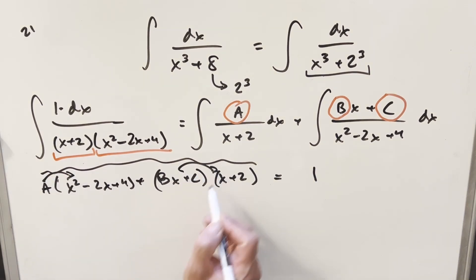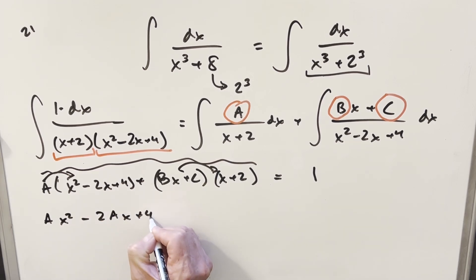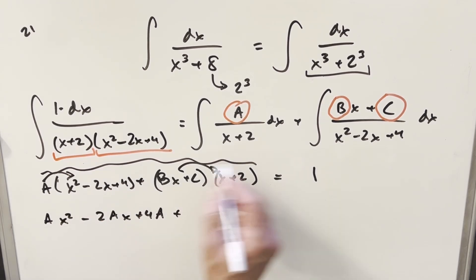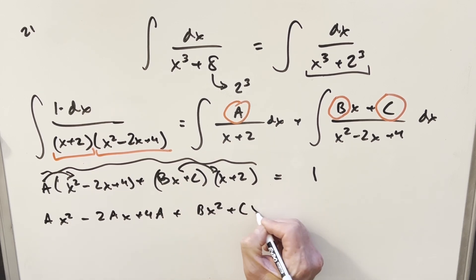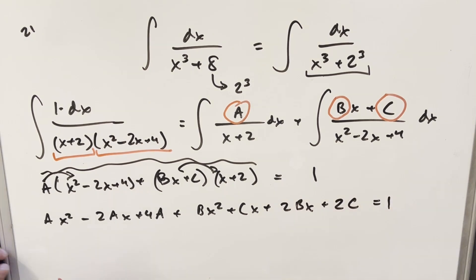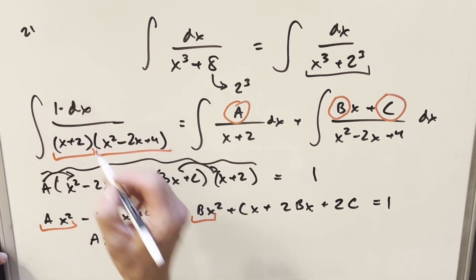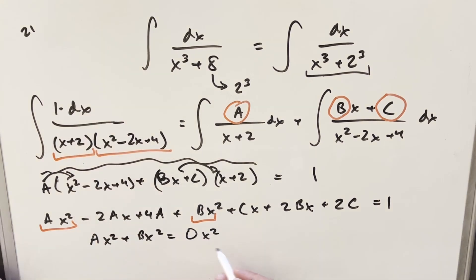Distributing everything out: we get ax squared minus 2ax plus 4a, then FOILing out we get bx squared, cx, 2bx, and 2c. Grouping the squared terms: ax squared plus bx squared. Since the right side has no x squared term, we get a plus b equals 0.